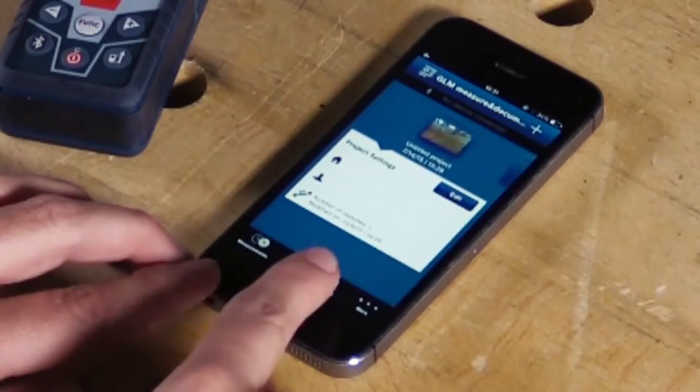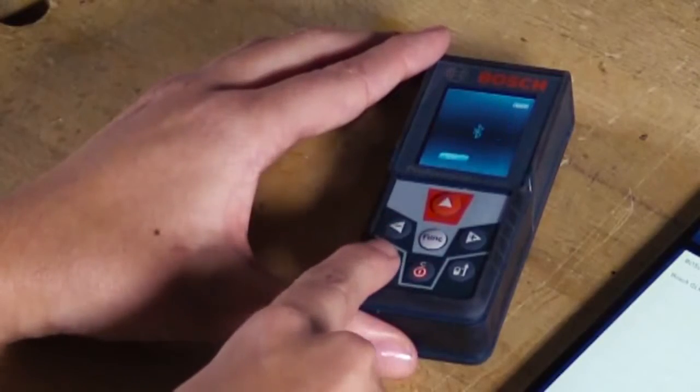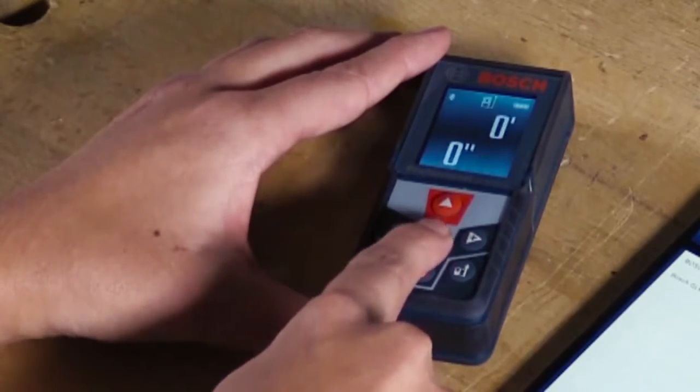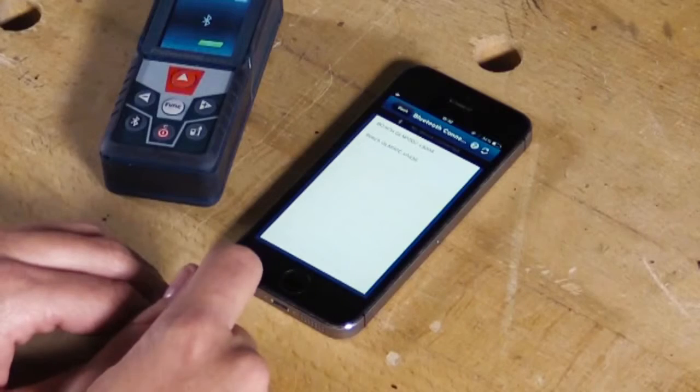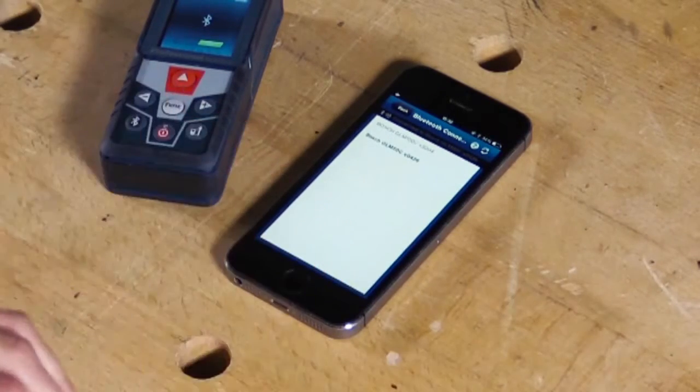Now let's connect your device to your smartphone. This can be done by going into settings, clicking on Bluetooth connection, activating Bluetooth on your device. Your device will then show up on the list and after pressing on it you'll see that it says connected to and then your device name.